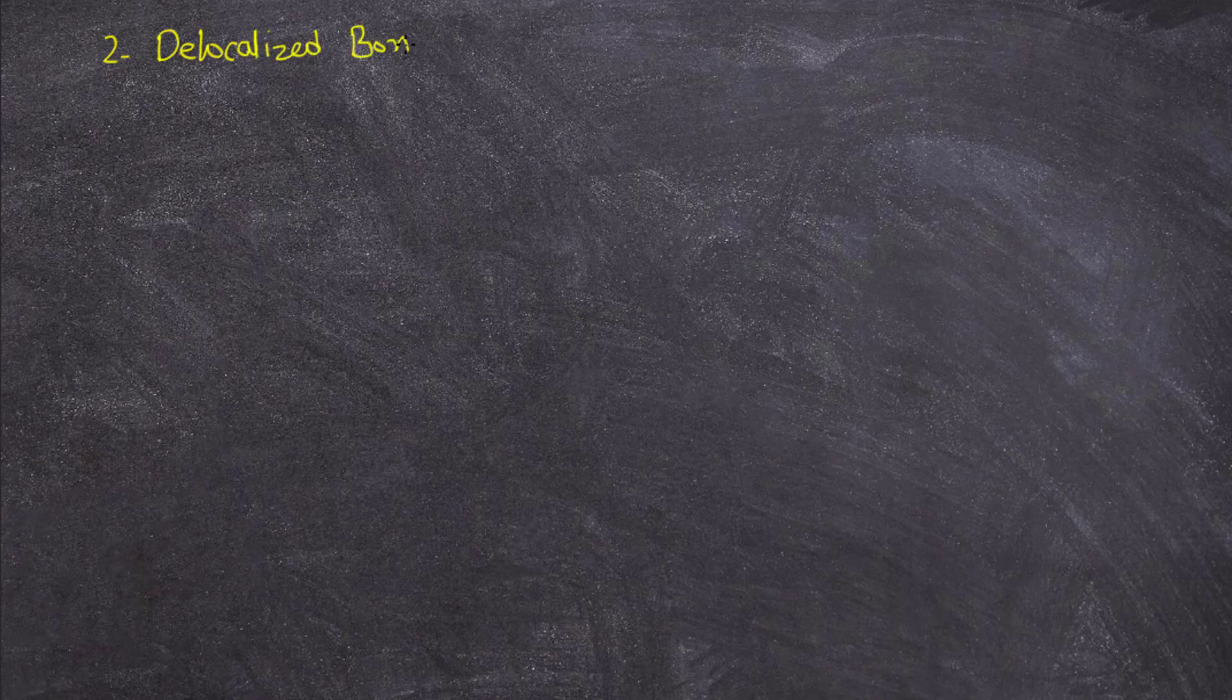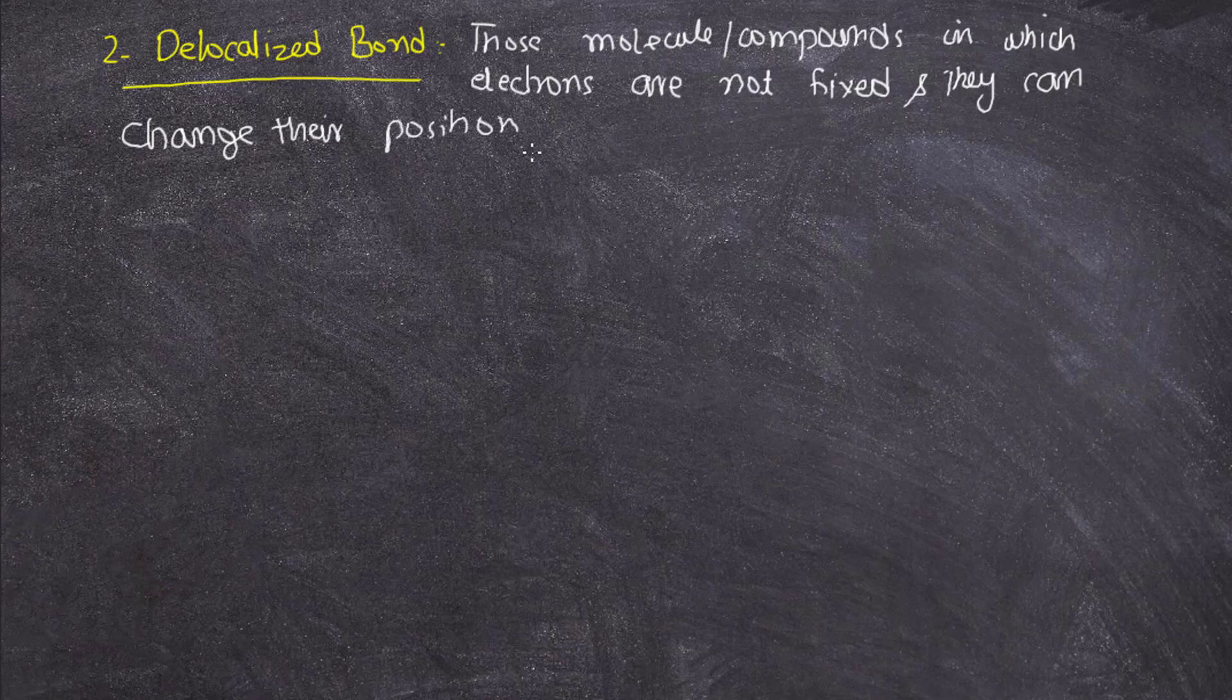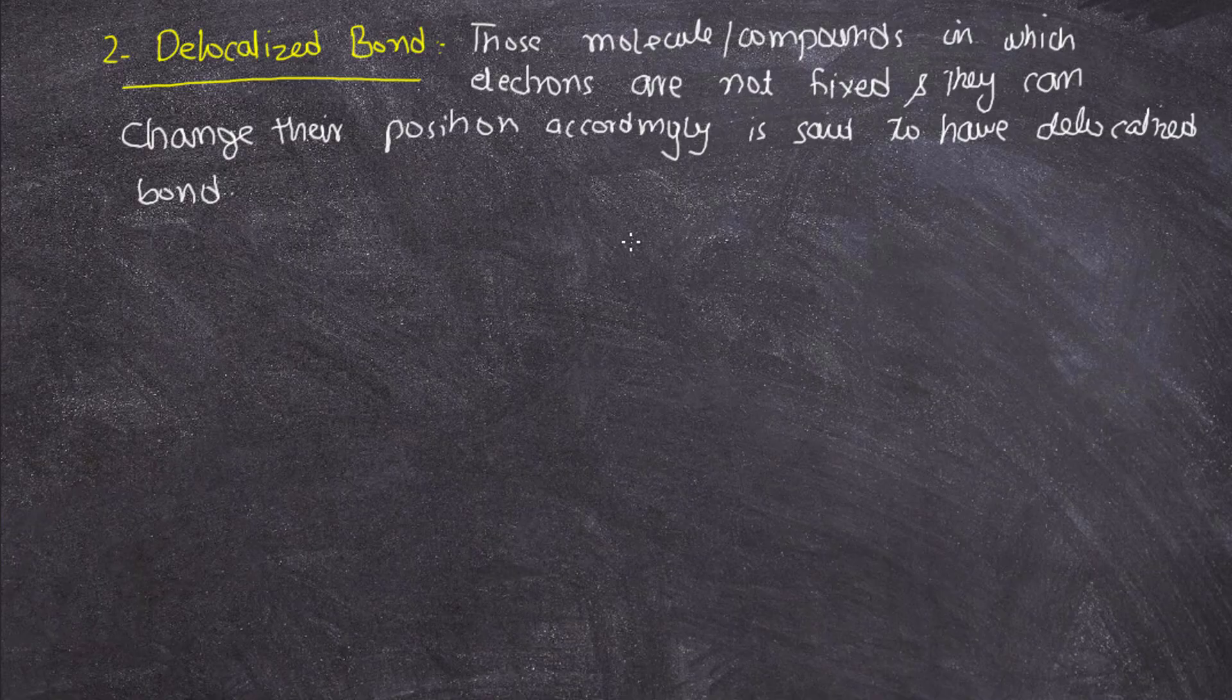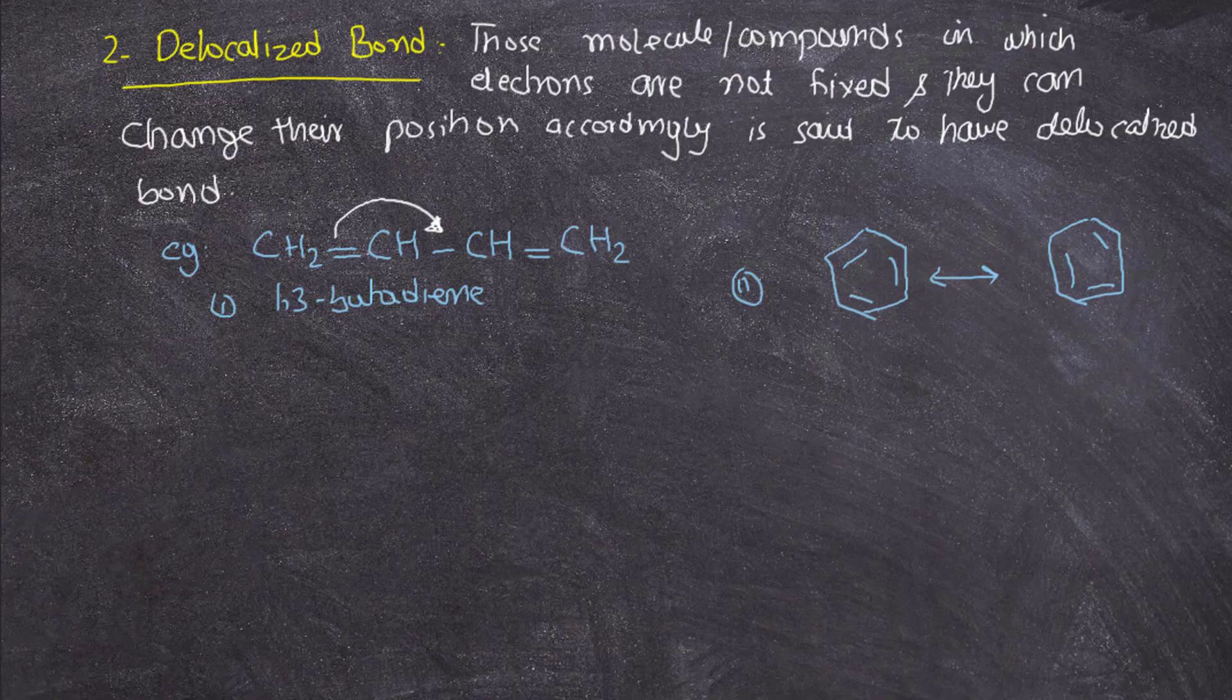Now let's discuss delocalized bonds. Those molecules or compounds in which electrons are not fixed and they can change their position accordingly are said to have delocalized bonds. Consider this example: 1,3-butadiene. CH2 is double bonded with another carbon, then single bond, then another double bond. Delocalized bonds are those bonds that have the tendency to change their position.